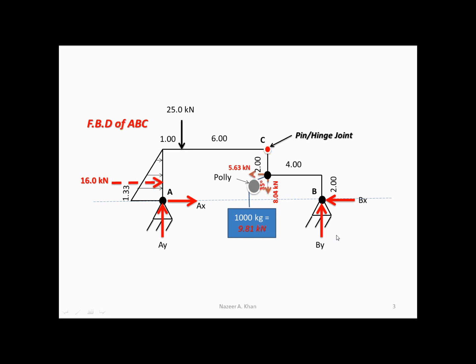The second point of the procedure is to solve for what you can with the entire structure intact — we're not taking it apart yet. If I were to take moments at this point, any force going through the point of application doesn't create a moment. So right off the bat, this force won't create a moment, this one won't create a moment, and the line of action of this horizontal force also goes through point A — so this one won't create a moment either. I'm going to get one, two, three, four, five moments — so I should have five terms in my equation.